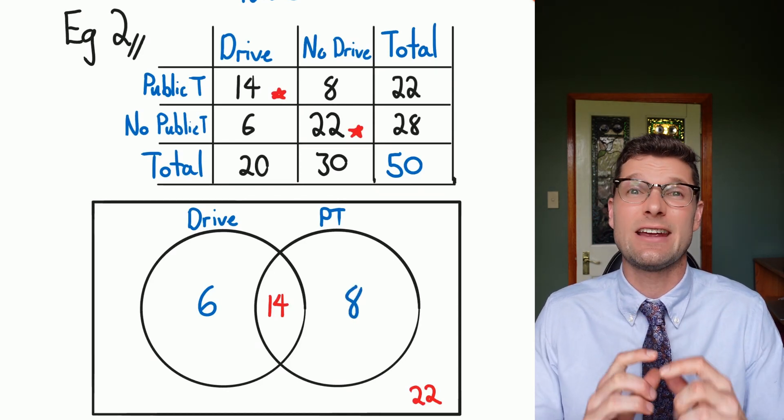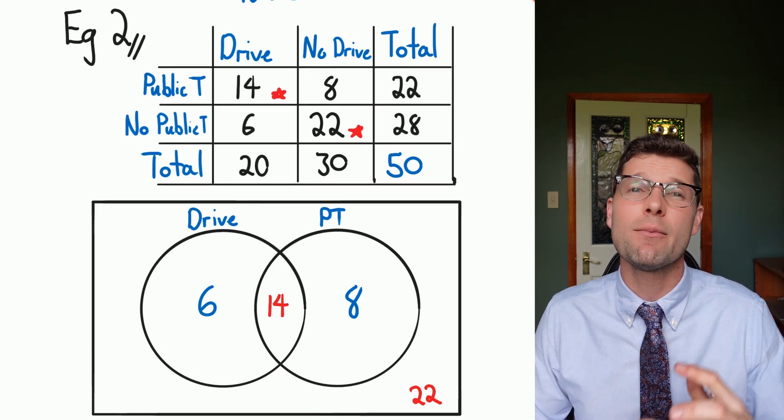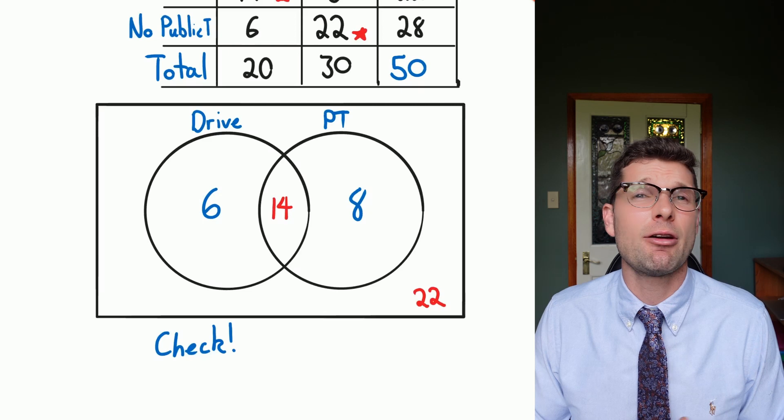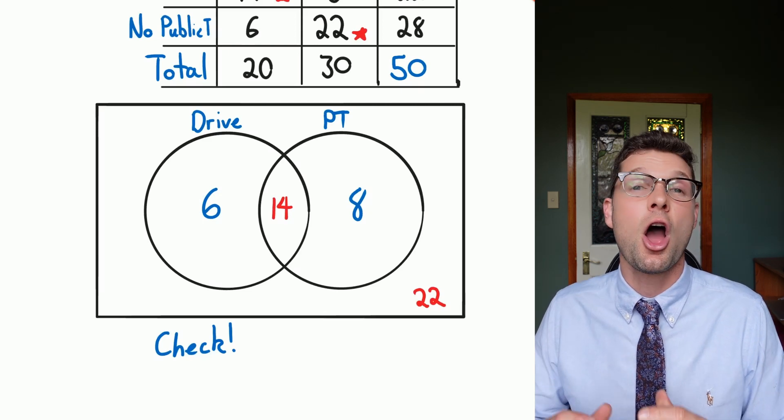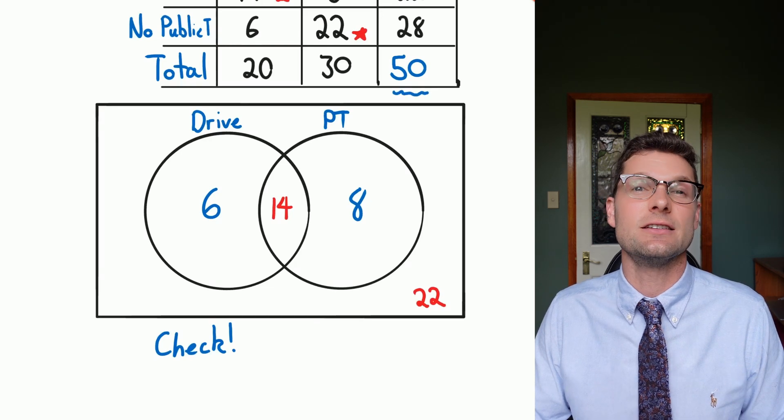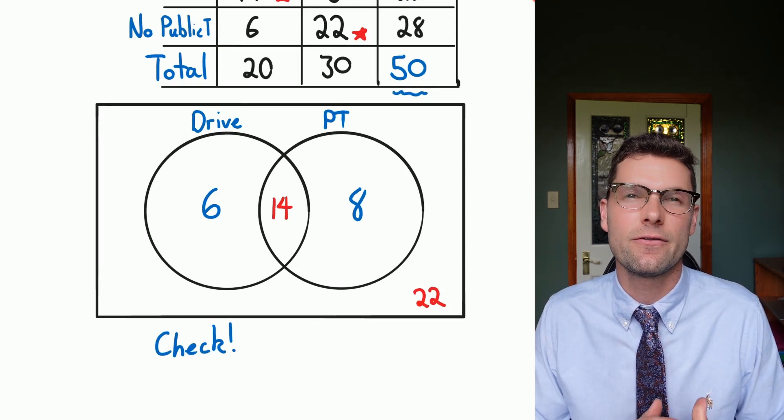So again we just have to read the inside of the Venn diagram making sure we know where everything goes. The best thing about these Venn diagrams is we can check if we've got it right. I know for a fact there were 50 people in total surveyed. So that's that bottom right hand corner of the two-way table.